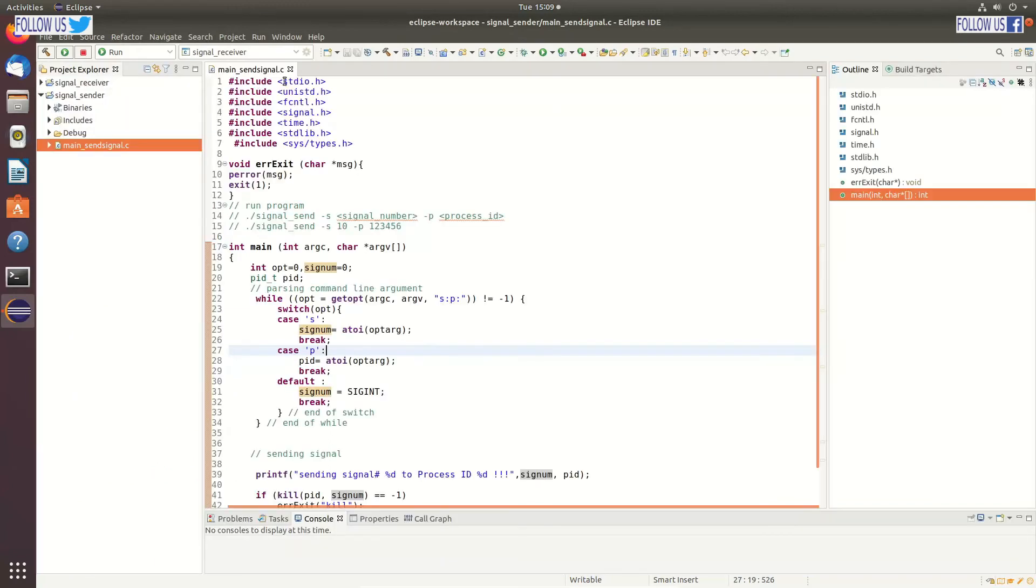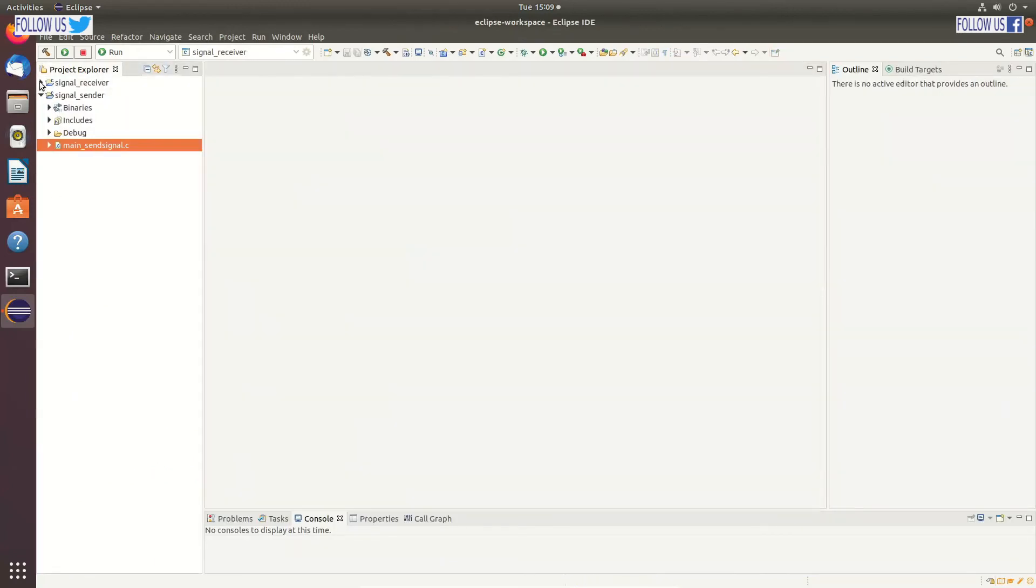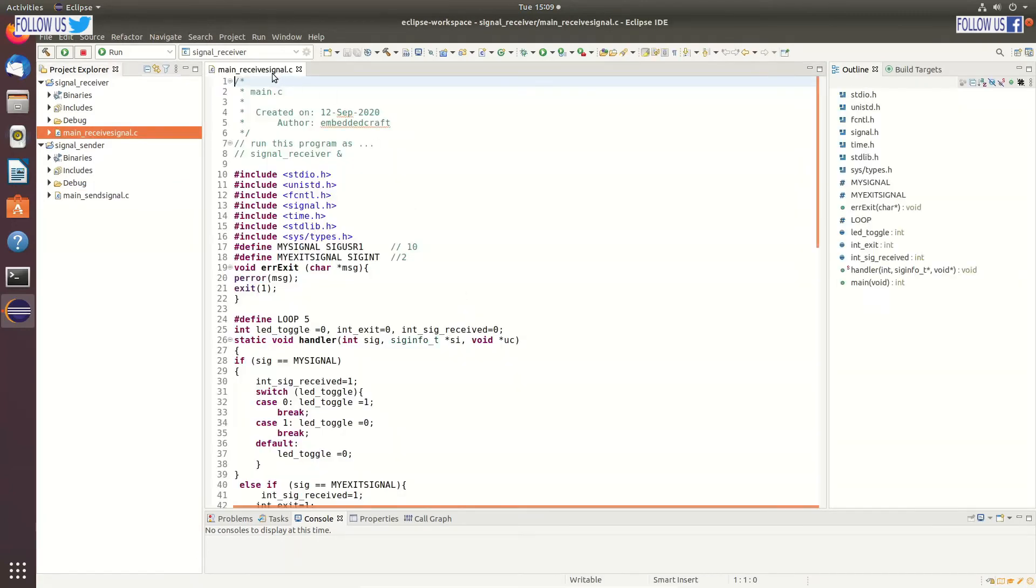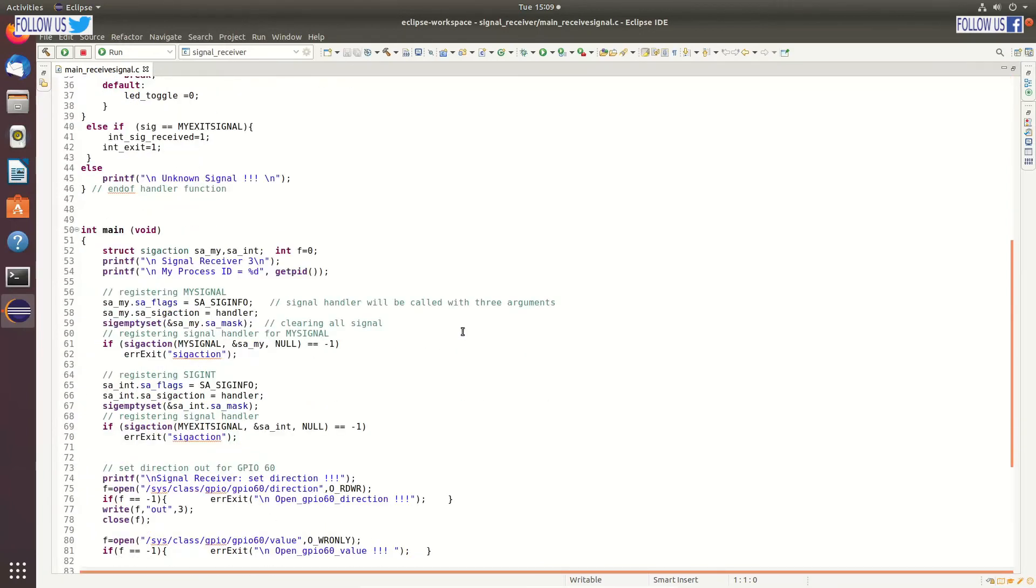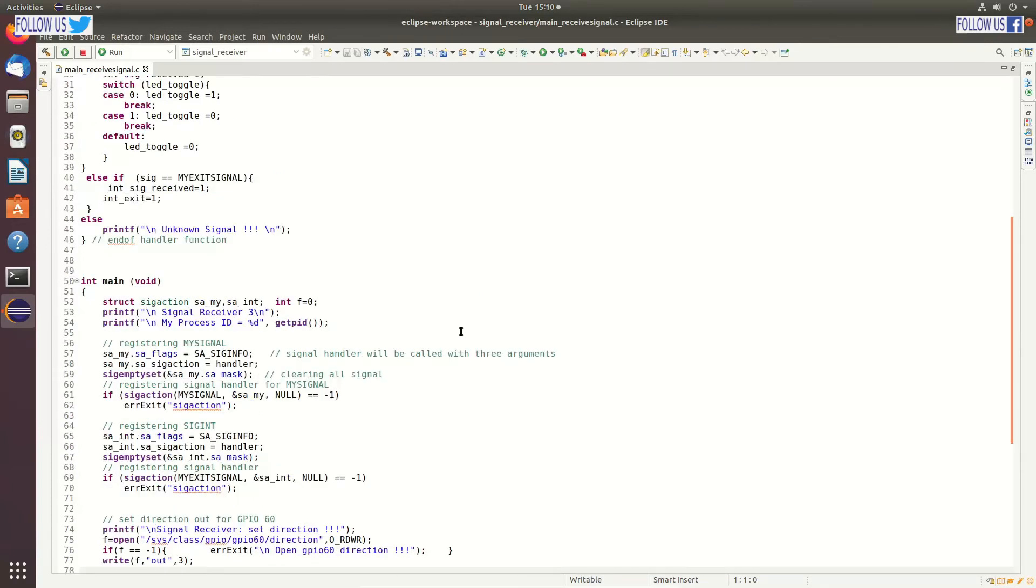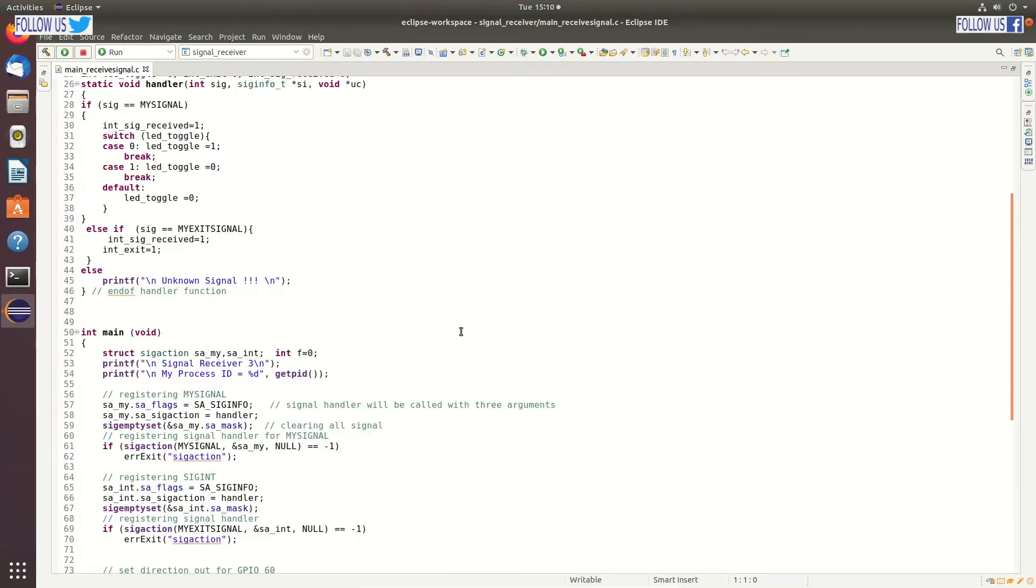Let me go to signal receiver code. This is my process. Here is C file. This is our main function. Let us review our signal handler. In signal receiver, as we have seen, we are going to receive two signals. One is my signal, which is SIGUSER1 signal. And second is SIGINT, this is to exit from the signal receiver process.